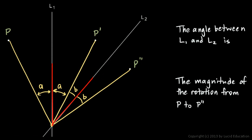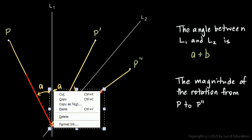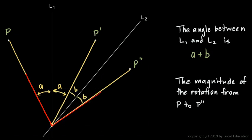Then you can see that the magnitude of the rotation is double that, because if you look at this segment that I'm marking in red here and this one over here, that angle you can see right there is 2A plus 2B. So write that in your notes: 2A plus 2B.